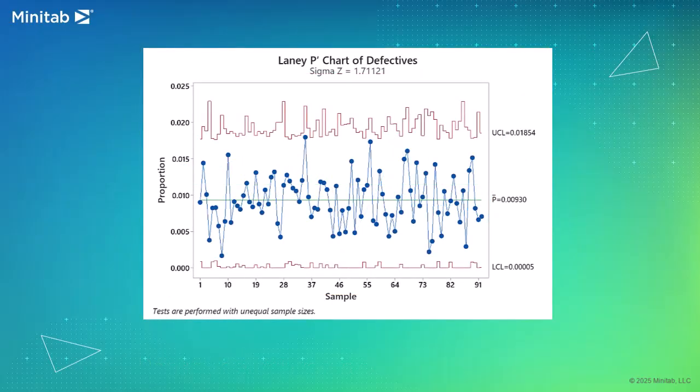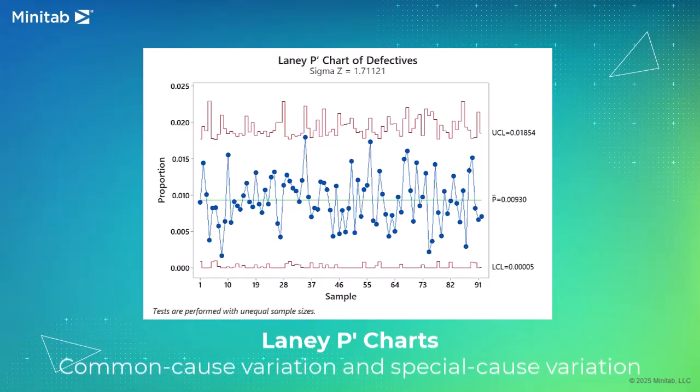If your data exhibit more or less variation than expected over time, a Laney P-Prime may more accurately distinguish between common cause variation and special cause variation than a traditional P-Chart.